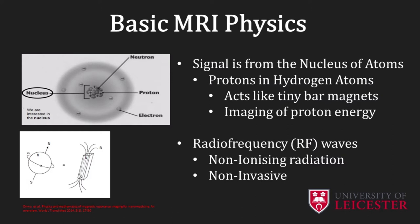Radiowaves are non-ionizing radiation, so MRI is considered to be a non-invasive imaging method. The nucleus of a hydrogen atom is particularly important for MRI because the body contains water and fat molecules that contain hydrogen atoms. The nucleus of a hydrogen atom is a proton, and because the proton has spin, it acts like a tiny bar magnet, so we can detect signals using MRI from hydrogen nuclei.